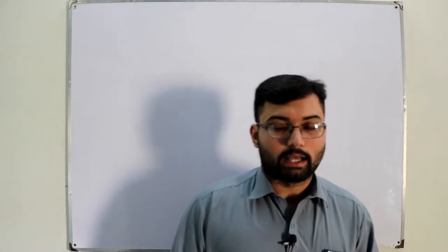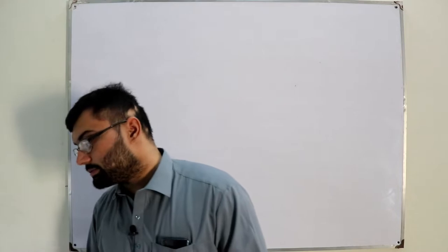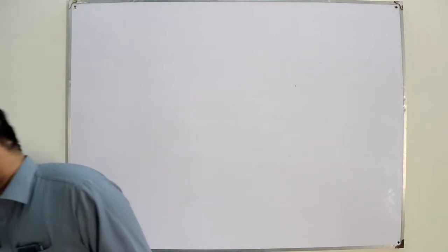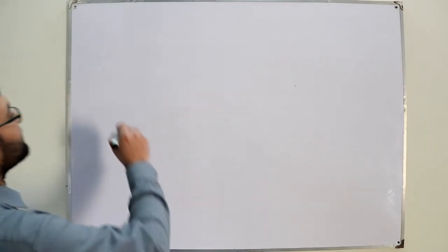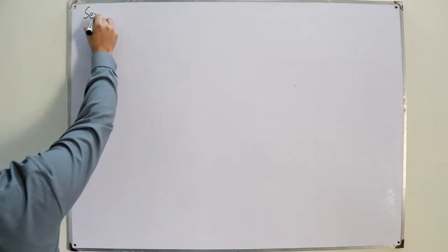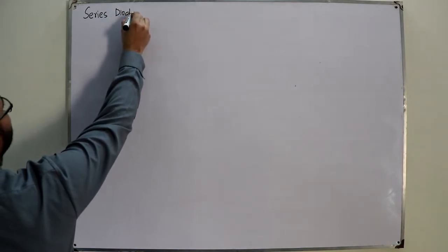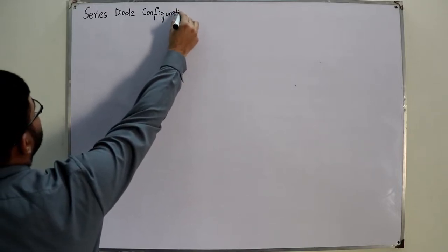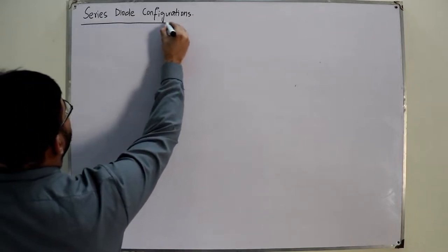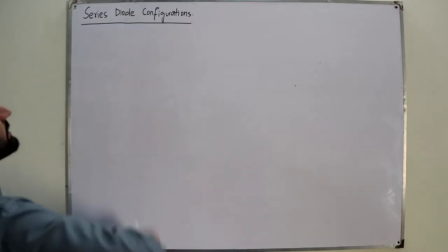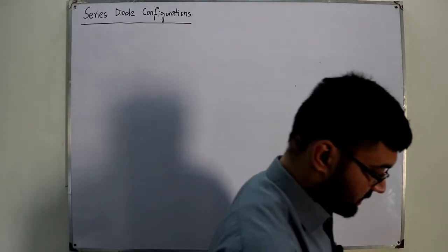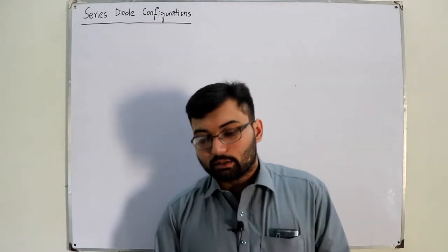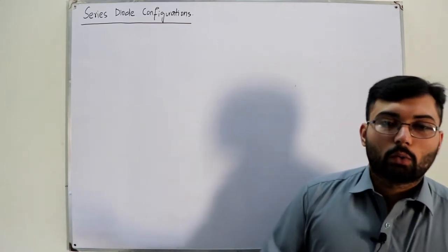Bismillahirrahmanirrahim. Assalamu alaikum. Salah Khan here, continuing chapter number two. Today our topic is article 2.3 of the book, which is the series diode configurations. The meaning of this topic is that we will be solving some example problems in which a diode is connected in series with the circuit — basically a series network — and we'll be applying the basic circuit analysis rules.